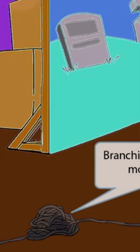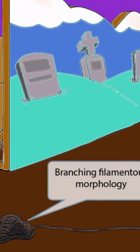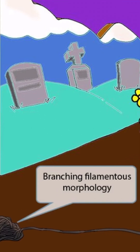Because this is a movie set, it shouldn't be too surprising that there are a bunch of tangled-up cords from cameras and other equipment. The tangled-up cords are a symbol for the branching filamentous morphology of Actinomyces, because the tangled-up cords look similar to the organism when viewed under a microscope.